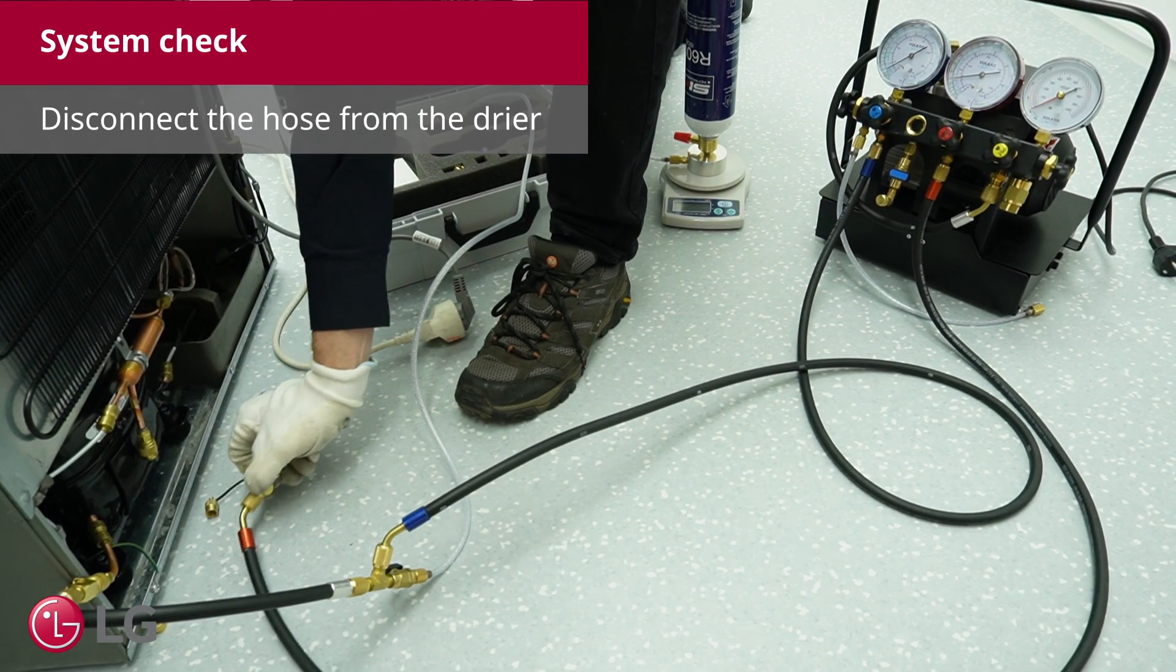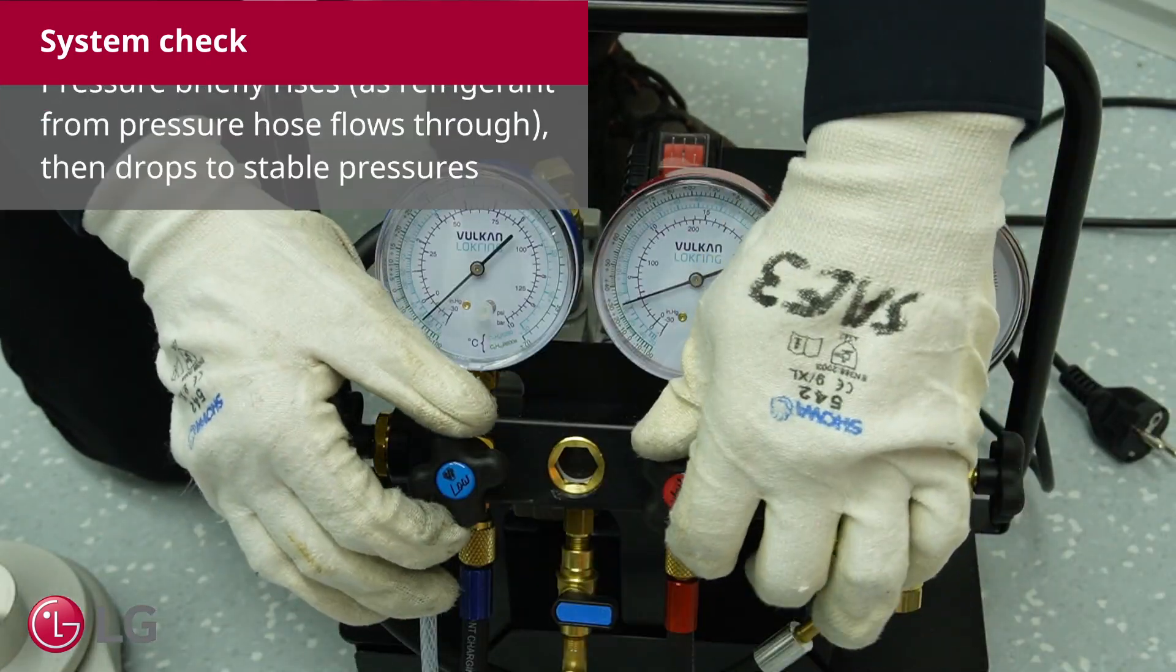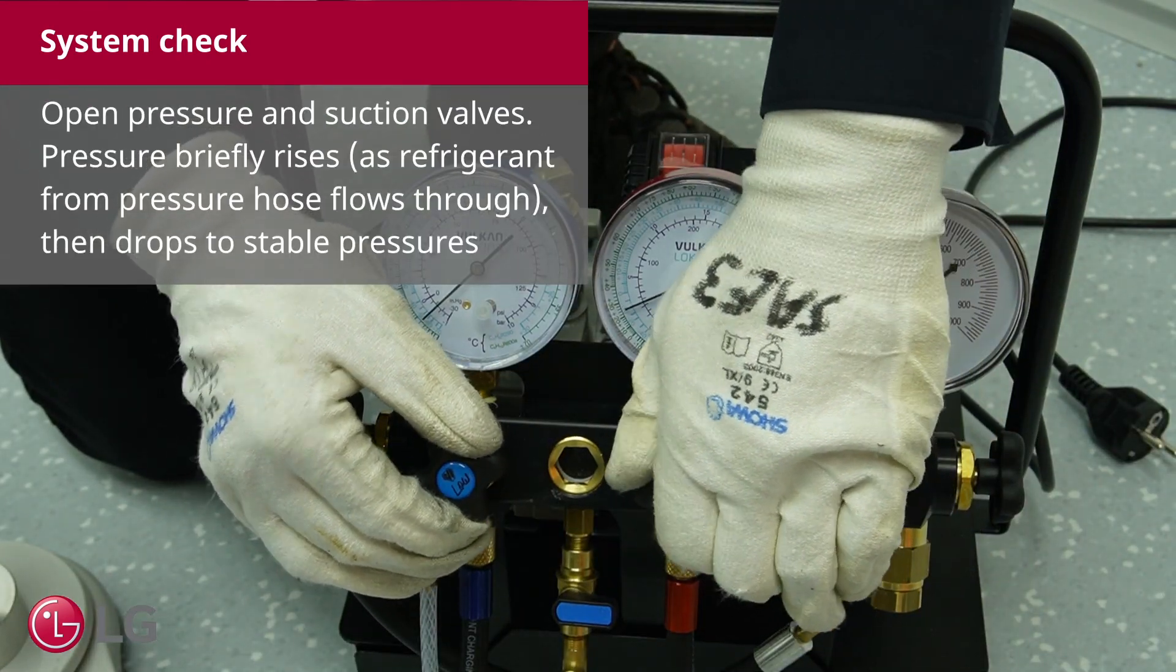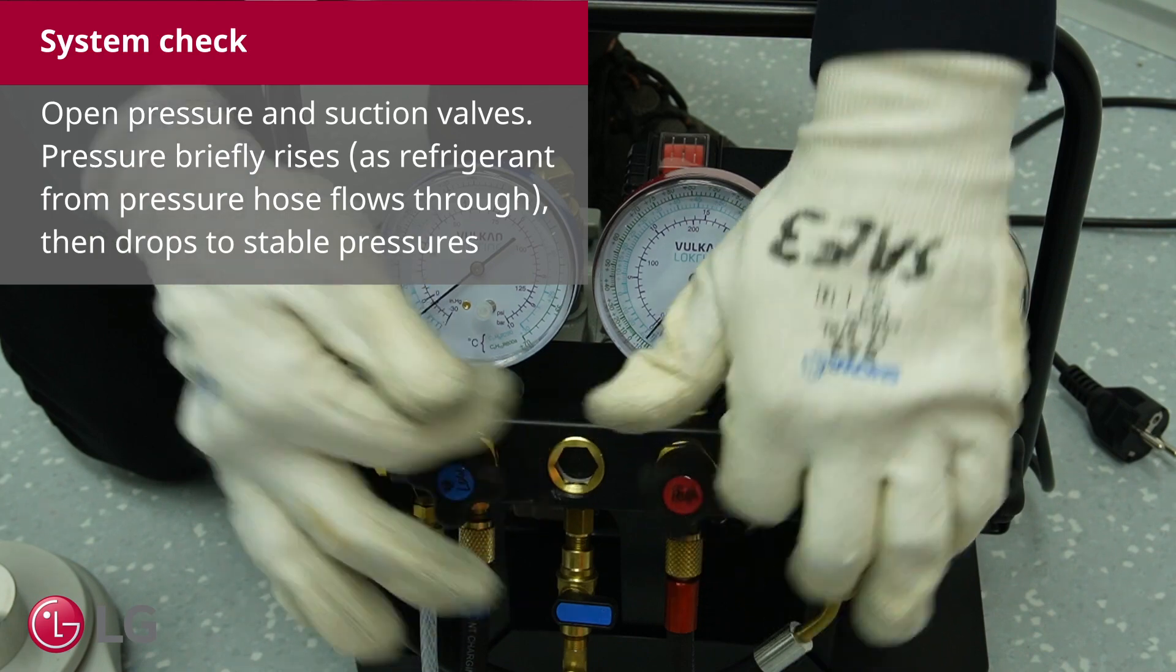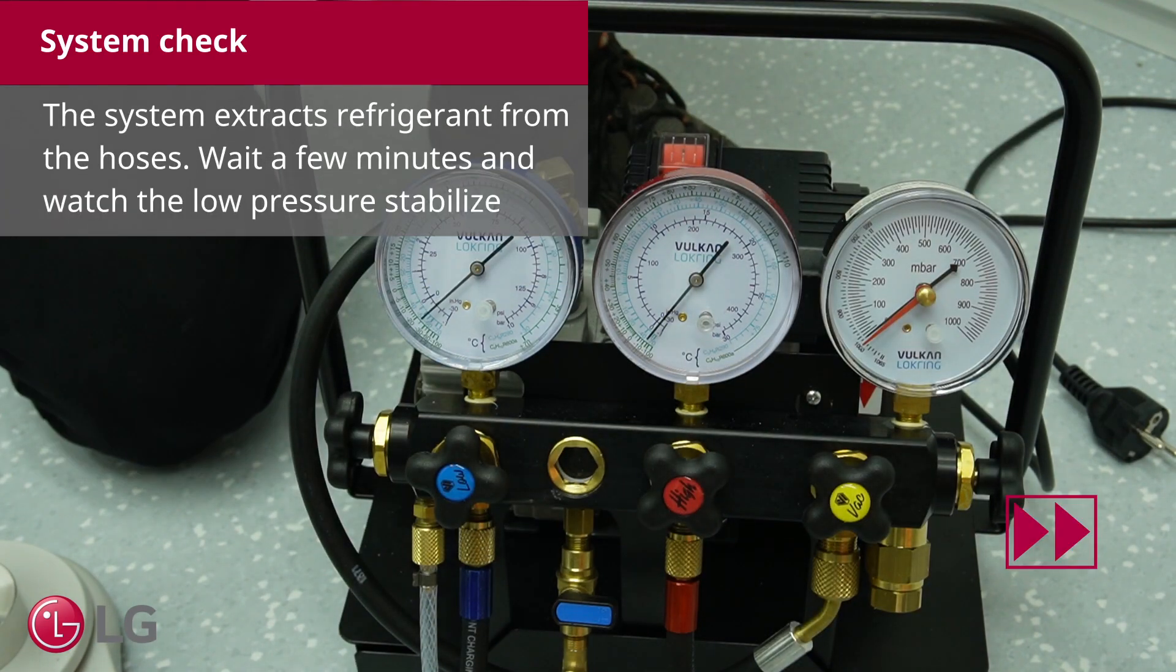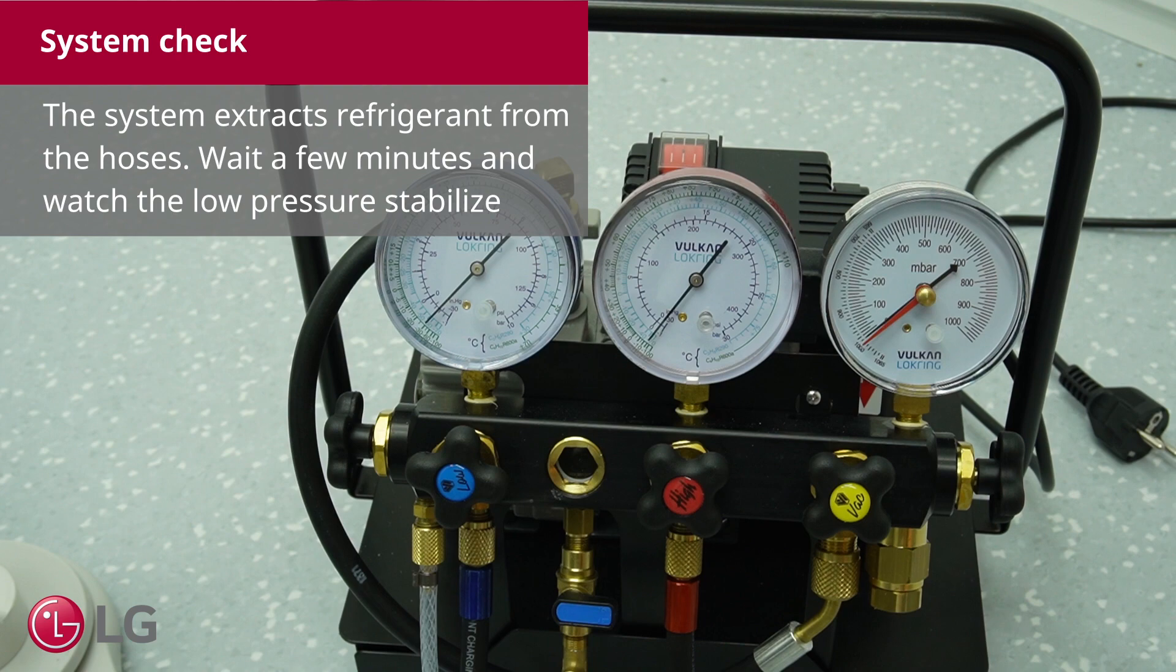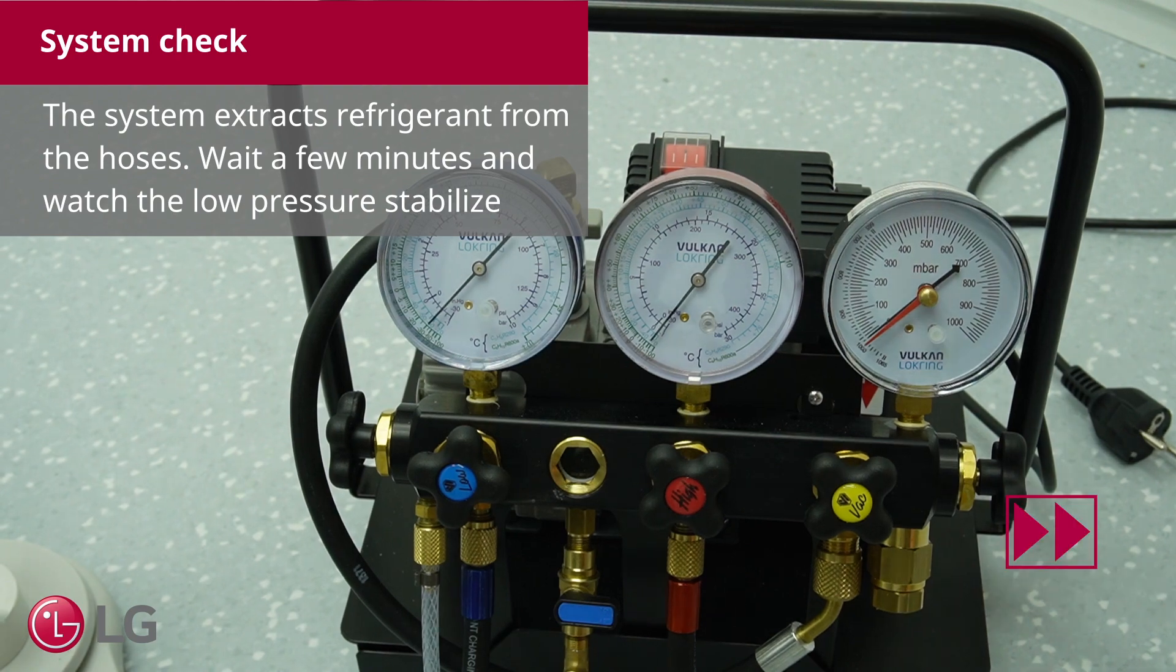Disconnect the hose from the dryer. Open the pressure and suction valves. The pressure briefly rises and then drops to stable values. The system extracts refrigerant from the hoses. Wait a few minutes and watch the low pressure stabilize.